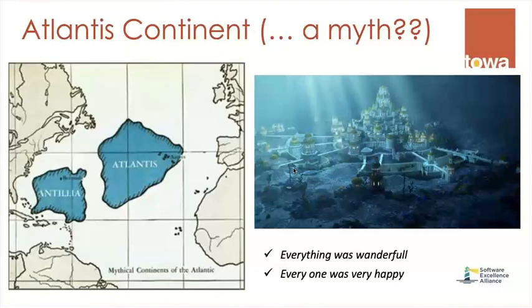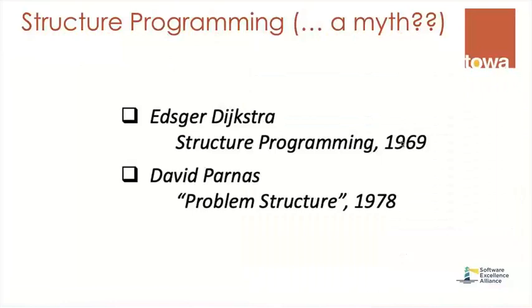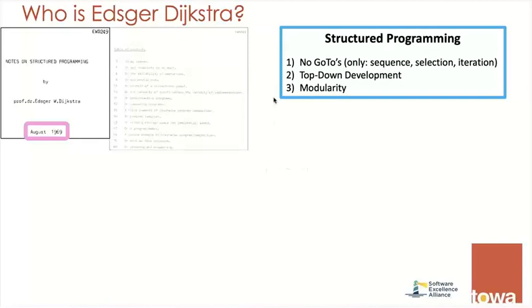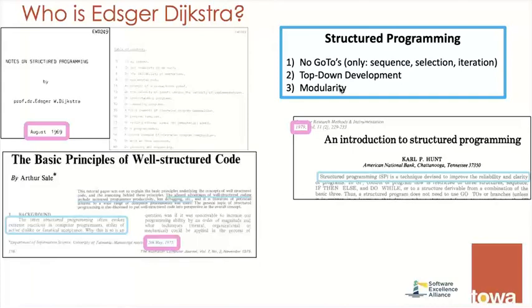Many centuries ago existed a wonderful continent called Atlantis. In that place, everything was wonderful. Everyone was very happy. You all know Atlantis is a myth. It never existed. We would like it to exist, but it's not. Also, many years ago existed something called structured programming. There were many advocates of these ideas. One of those was Dijkstra and the other David Parnas. The first paper of Parnas about structured programming, it was published 50 to 53 years ago. The idea was very simple. No GOTOs of development and modularity. Many people at that time wrote about structured programming. There was a lot of enthusiasm.